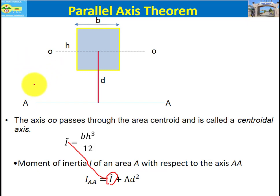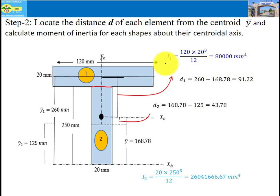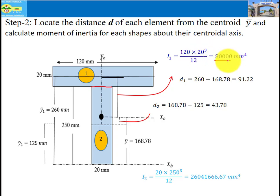Step two: locate the distance d of each element from the centroid y-bar and calculate the moment of inertia for each shape about their centroidal axis. For shape one, which is a rectangle, the moment of inertia I₁ about its centroidal x-axis is b·h³ over 12, where b is 120 and h is 20. Therefore I₁ equals 80,000 mm⁴, which is 80 times 10 to the power of 3 mm⁴.